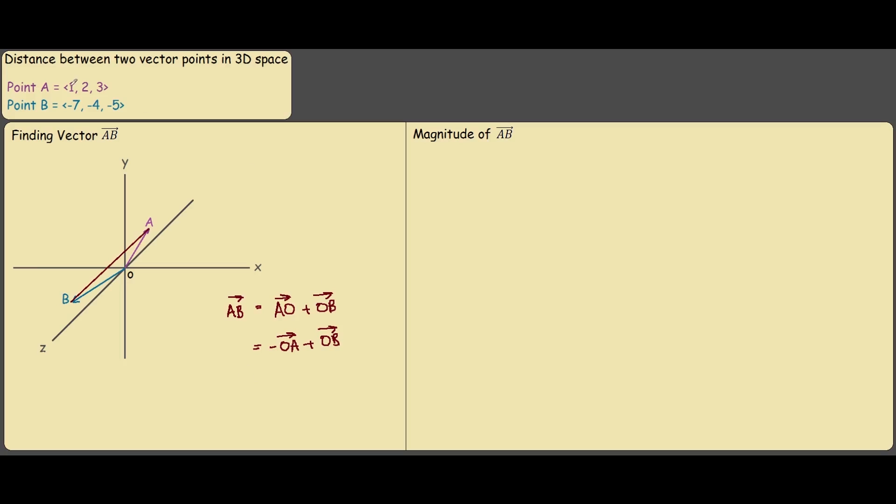So now we can write out our vectors in the coordinates and add them up together. So we have negative OA which is negative 1, 2, 3, plus OB is negative 7, negative 4, negative 5. And if we add these together we get negative 8, negative 6, and negative 8.